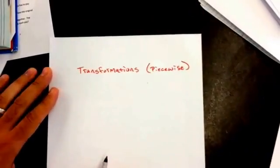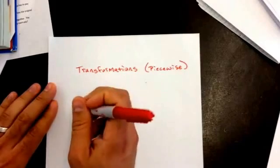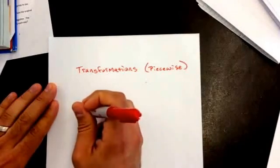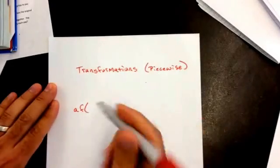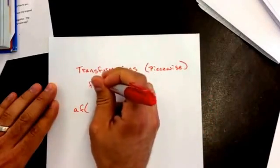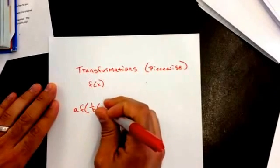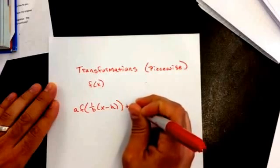So what happens on these is, this works with all functions, but we're going to see them a little bit differently. What I mean by that is, we're going to have our rule as f(x) in the form of a times f of one over b times parentheses x minus h, plus k.